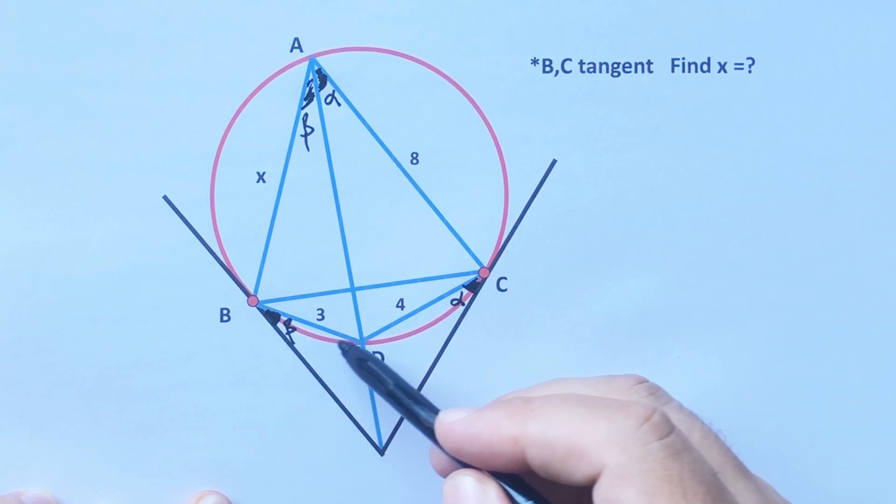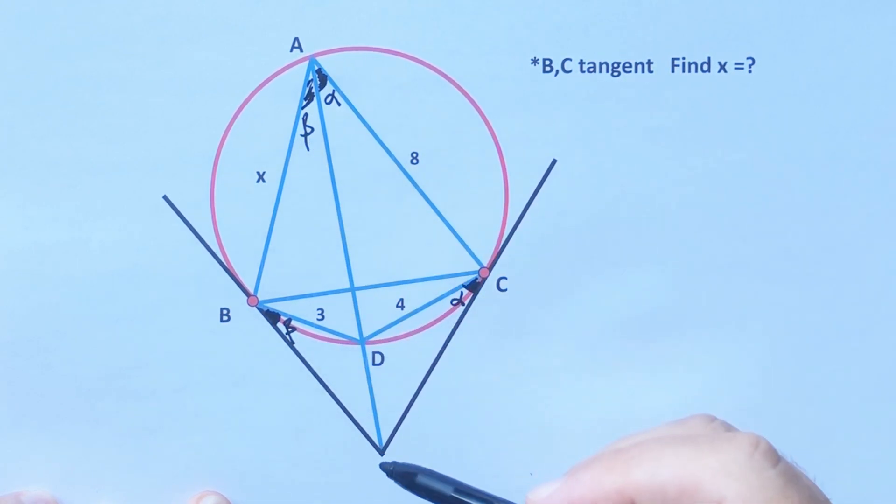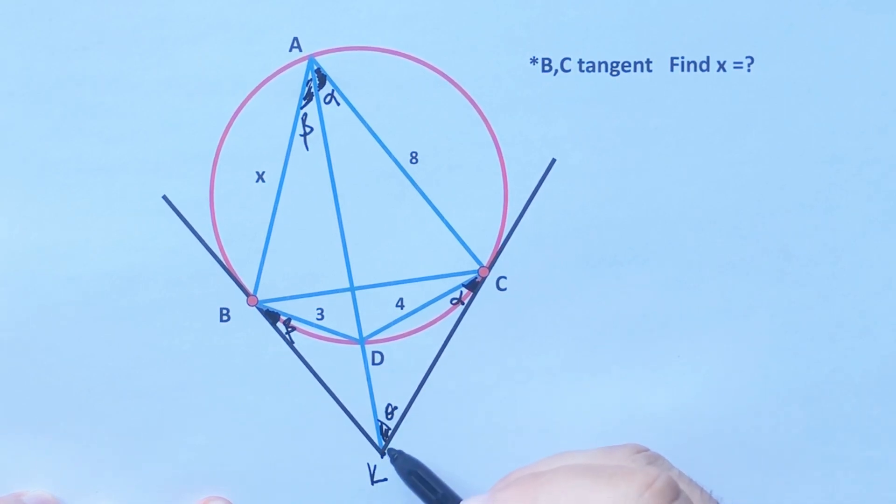Because they have same arc, right? Okay, and then let's call here theta, and I want to represent with K this point.